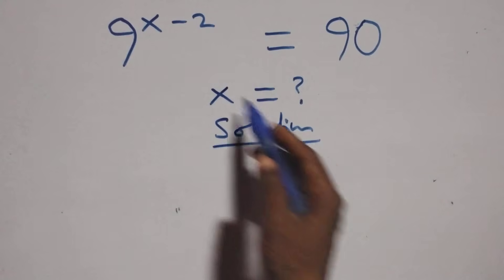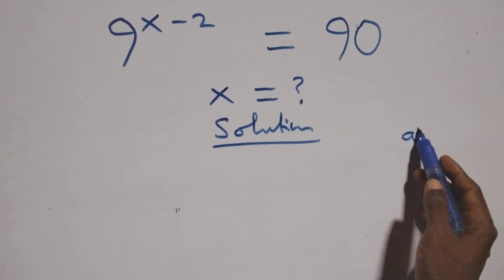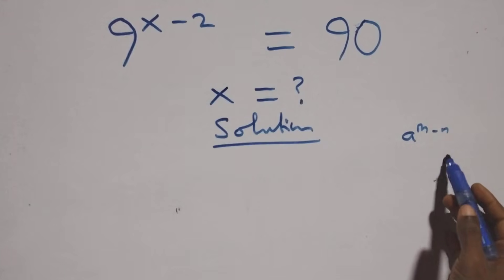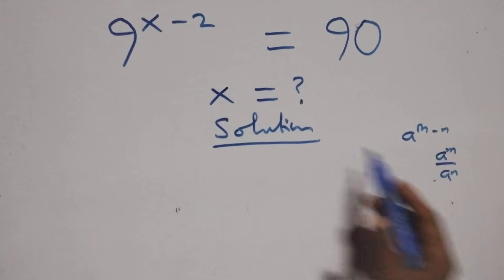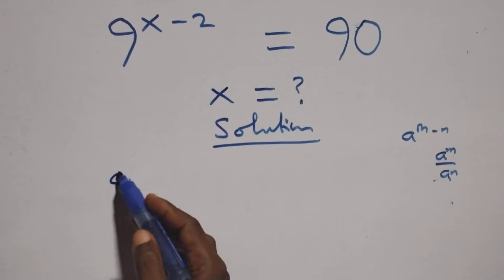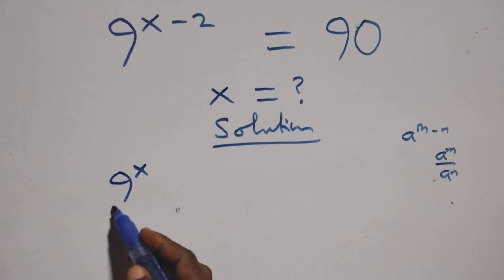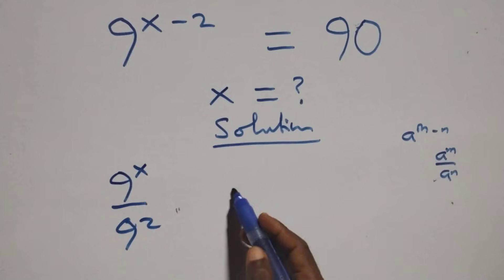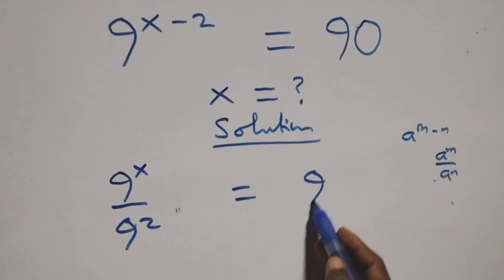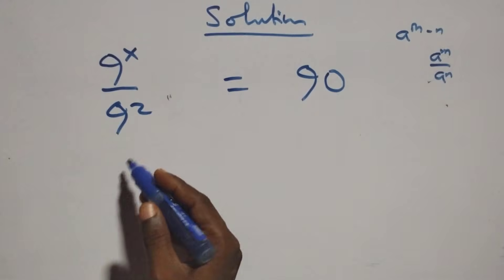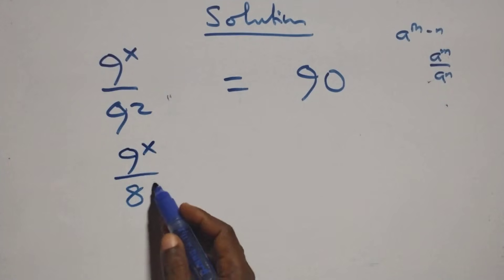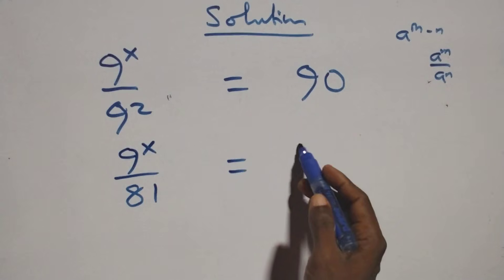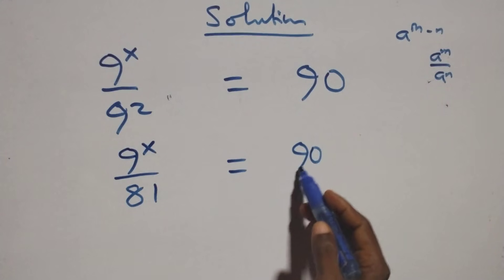On what we have here, in this step we have a raised to power m minus n, which is the same thing as a raised to power m over a raised to power n. So here we write a raised to power x over nine squared equals ninety on this side. Here we have nine raised to power x over nine squared; nine times nine is eighty-one, equals ninety over one.